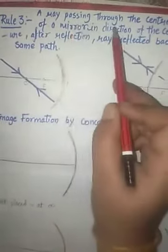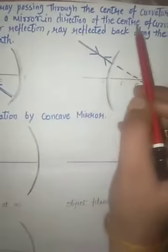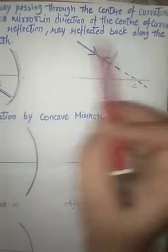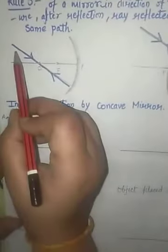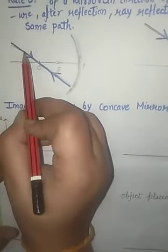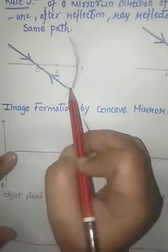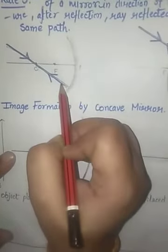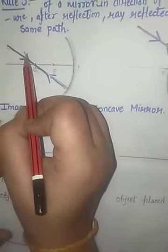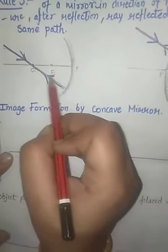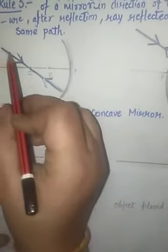Rule number three: a ray passing through the center of curvature of a mirror, after reflection, gets back along the same path. When a ray comes and passes through the center of curvature, it falls on the mirror and reflects back along the same path. The incident arrow and the reflected arrow are both on the same line.